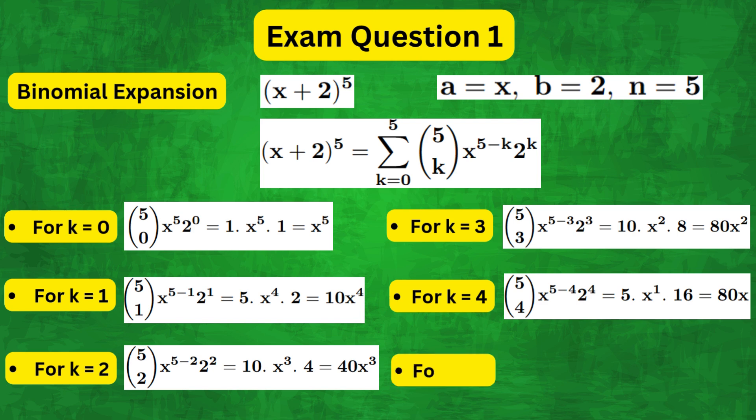And finally for k equals 5 we have 5 combination 5, x to the power of 0 times 2 to the power of 5, which equals 32.